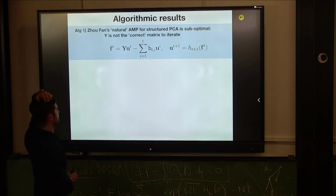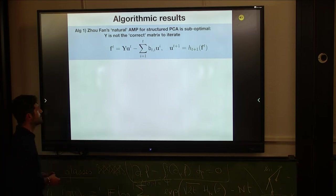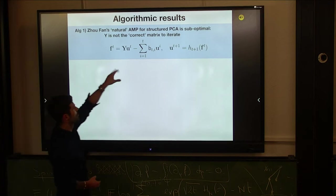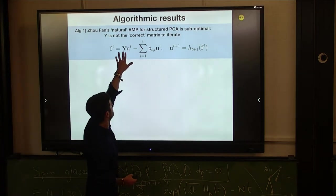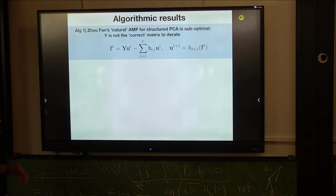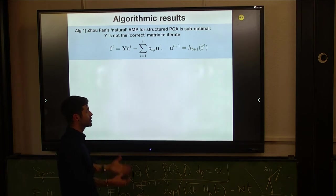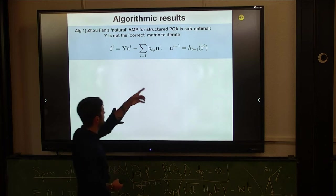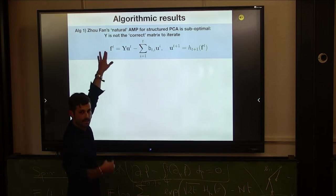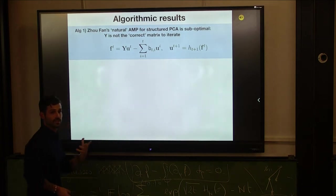Algorithmic results. The first thing we show is the fact that this kind of natural AMP derived from the work by Hopper and Winter, which has been refined by Zoufan, which iterates these equations there, is suboptimal. So this is a standard form of AMP iteration. Here you have the data matrix which multiplies your current estimator, and you remove a certain correction called the Onzager reaction term. Then you apply this quantity, you put this quantity as an argument of a certain denoising function that takes into account the information about the prior, about the signal properties, and you iterate.